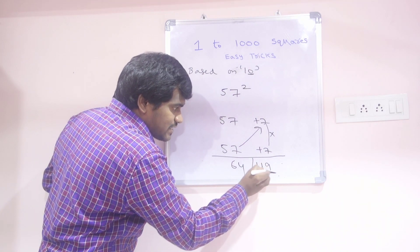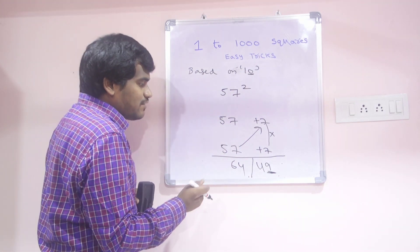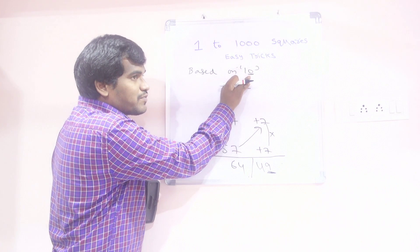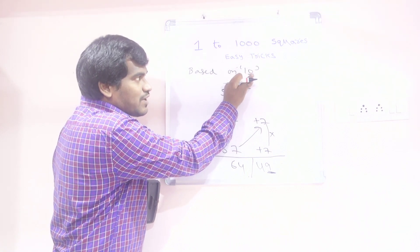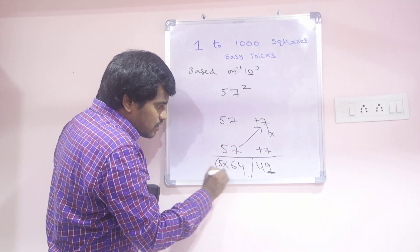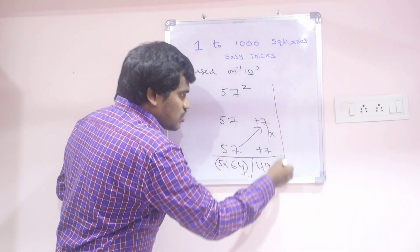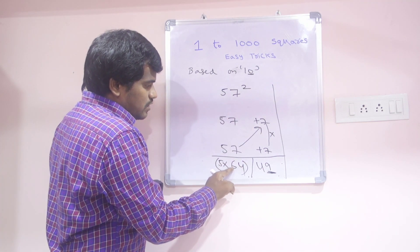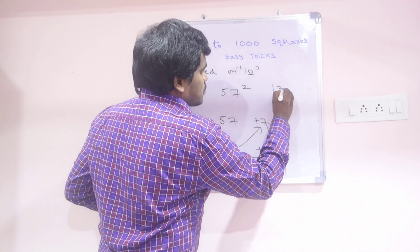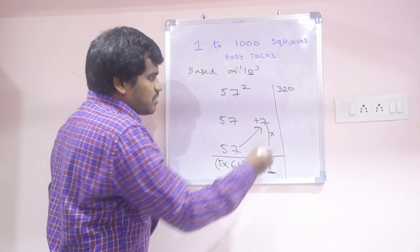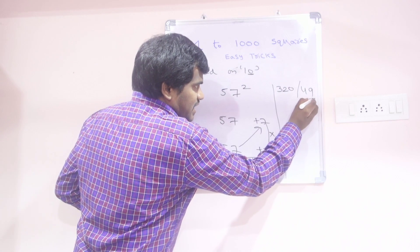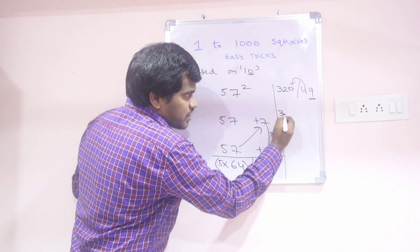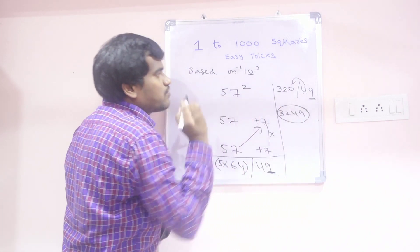We can take only single digit from 49. Before going to add, since this is 50 and we are based on 10 — 50 means 5 times 10, so multiply with 5 here: 5 into 64 is 320. Slash 49 — but we take only single digit, so this 4 is added here. Then 3, 2, 4, 9 is the square of 57.